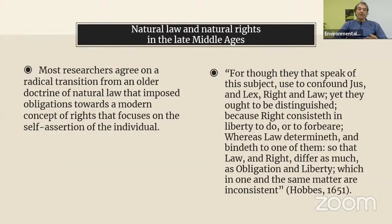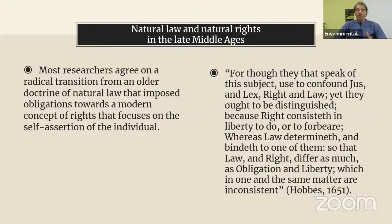Going towards an all-encompassing philosophical concept of individual liberty, we would have to wait quite a few centuries more. Most researchers agree that at some point — most point towards the 17th century — there was a radical transition from the older doctrine of natural law that imposed mainly obligations, towards a modern concept of rights that focused on the self-assertion of the individual. That distinction was definitely there in the times of Hobbes, writing in 1651. In The Leviathan, the distinction between right and law is very clear: 'right consists of the liberty to do or to forbear, whereas law determines and binds to one of them. Law and right differ as much as obligation and liberty.'